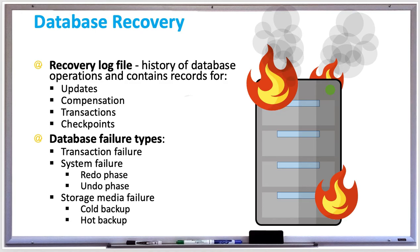There are two ways to recover from storage media failure. A cold backup creates checkpoints and database backups at periodic times of low database activity, such as 2 a.m. when most people are not using the system. A hot backup keeps a secondary database in sync with the primary one, so if the primary fails, the secondary is switched over to become the new primary.